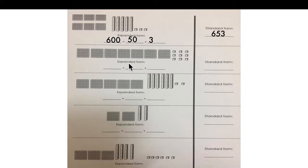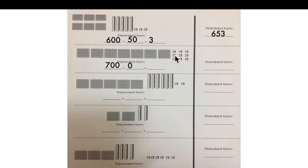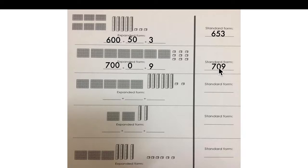Next one. How many hundreds? 1, 2, 3, 4, 5, 6, 7. Seven hundred. How many tens? I don't see any — that means zero. How many ones? 1, 2, 3, 4, 5, 6, 7, 8, 9. Nine ones. Now this is a little tricky — we need to write 7, 0, 9 because we have no tens, that means zero tens. The standard form is seven hundred nine.